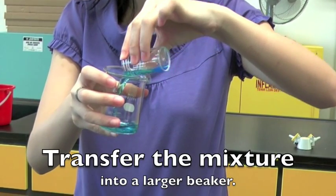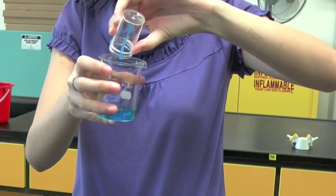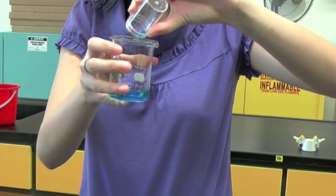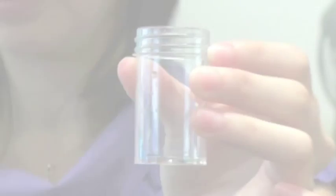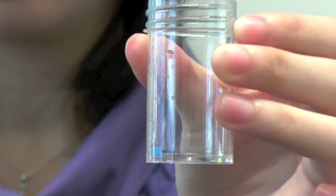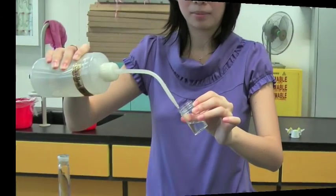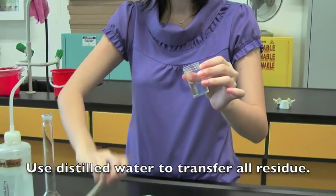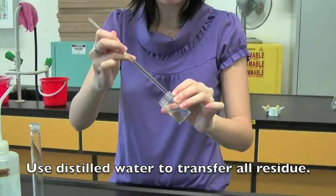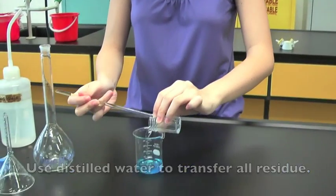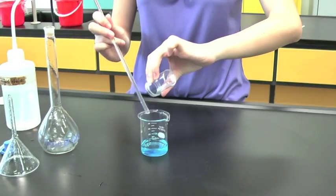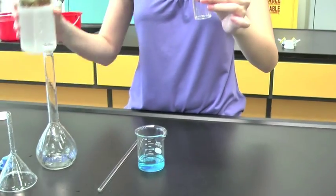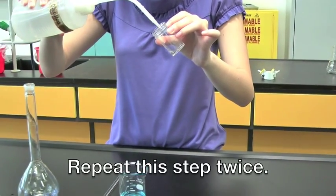Transfer the mixture into a larger beaker. You will find that there is still a small amount of residue left in the bottle. Use distilled water to transfer all residue into the beaker. Repeat this step twice.